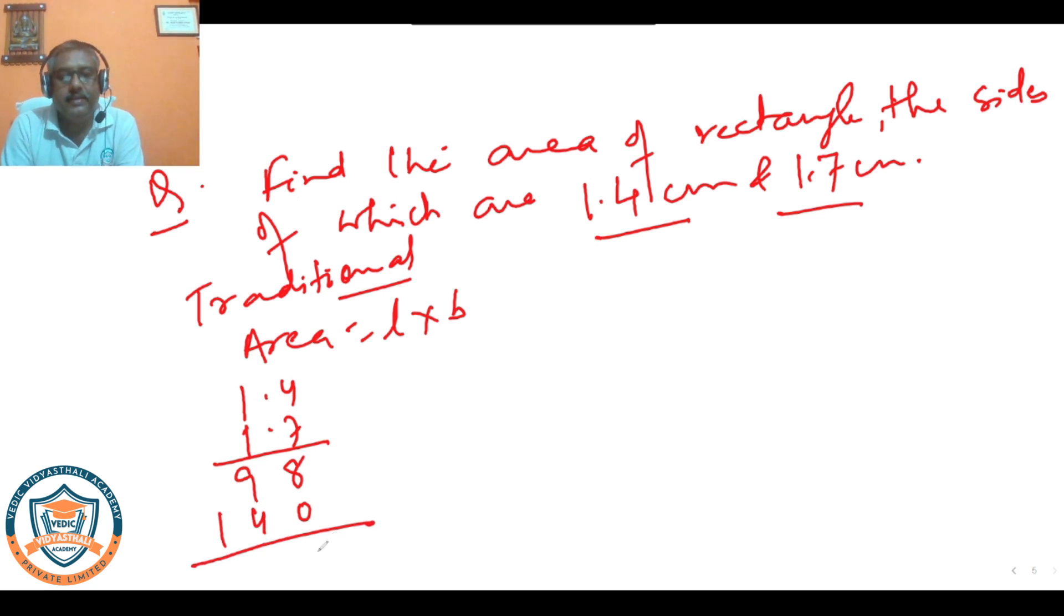So 8, 9, 4, 13 and it is 2. Now we will be putting decimal here. After decimal 1, after decimal 1, so decimal placement will be here. So 2.38 cm square.